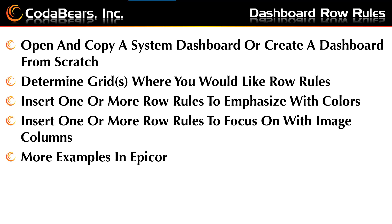Using Row Rules can help identify rows in grids that are out of the normal data regions or otherwise require focus. For example, you can highlight values above certain criteria, below certain criteria, or other conditional criteria.